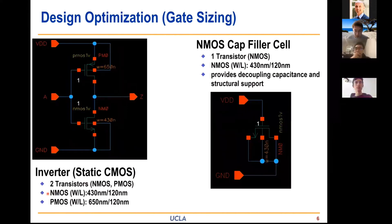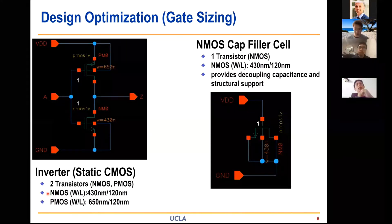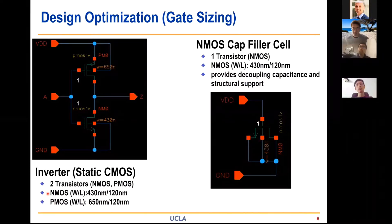Here is our static CMOS inverter, and we just used unit reference inverter sizing. We also experimented with a cap filler cell — as discussed in lecture, with the source, drain, and bulk grounded — acting as a capacitor to provide decoupling capacitance to the circuit to lessen VDD spikes when it's transitioning.